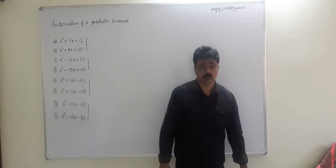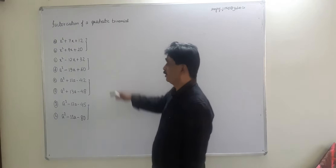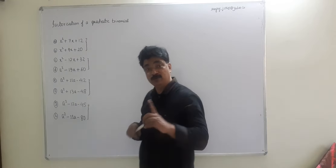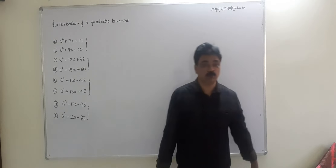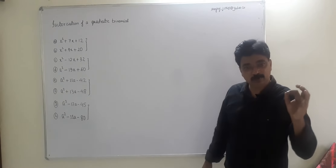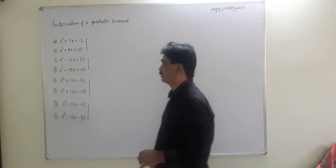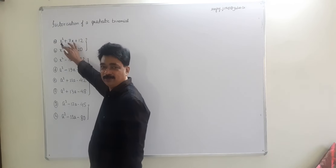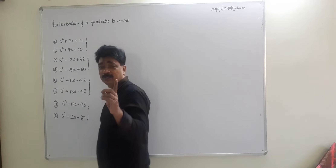I've organized this topic into four types and we'll alternate — one example from me, one from you. Try to understand the concept first. The general form is ax² + bx + c, and the sign of the constant term gives a very important hint.